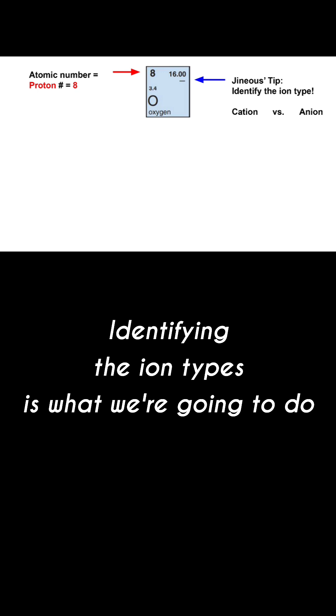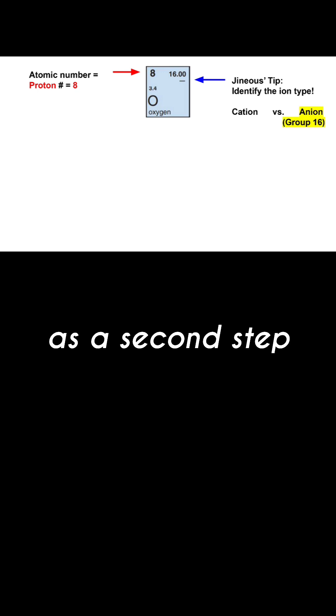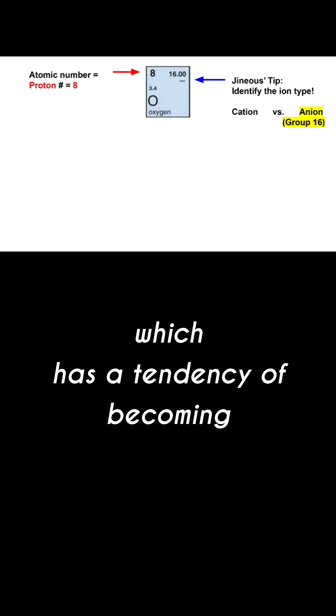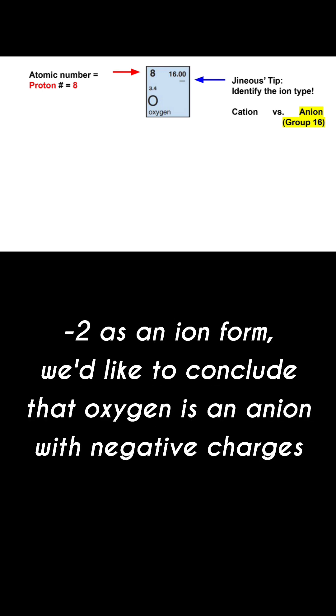Now here's a little tip. Identify the ion types is what we're going to do as a second step. Oxygen belongs in group 16 which have a tendency of becoming negative two as an ion form. We would like to conclude that oxygen is an anion with negative charge.